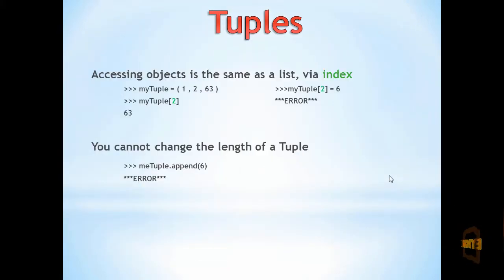Here are some examples of accessing tuples via index. In the first example on the left we are accessing the last item, remembering the first item starts with 0. On the right here we're trying to assign a new value to the object in the last position, that comes back with an error.